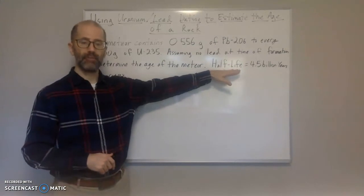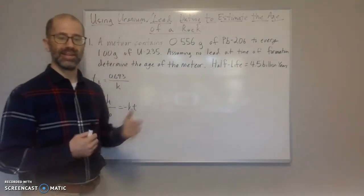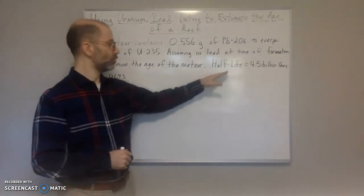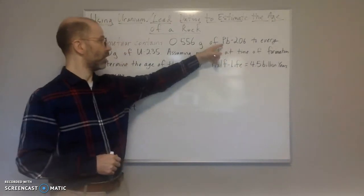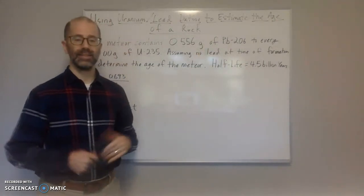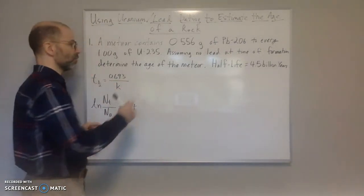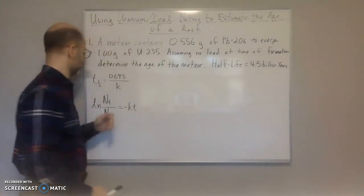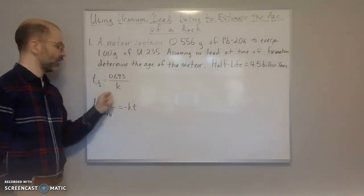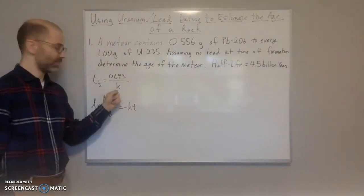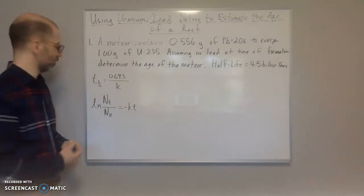We're going to use this to determine the age of the meteor. They give us the half-life of uranium-235 decay to lead-206 is about 4.5 billion years. Well, what are we going to do? We're going to have to take the half-life and put it into the equation and solve for the rate constant k.